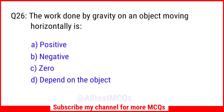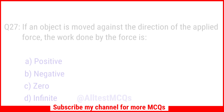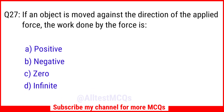Question No. 26: The work done by gravity on an object moving horizontally is? The right answer is Option C: Zero. Question No. 27: If an object is moved against the direction of the applied force, the work done by the force is? The right answer is Option B: Negative.